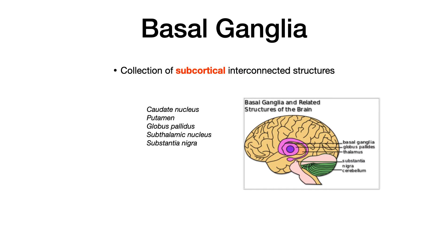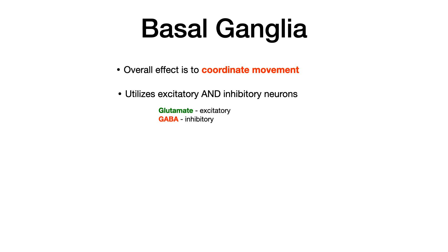The overall effect of the basal ganglia is to coordinate movement. It uses both excitatory and inhibitory interneurons to connect these structures. As a general rule, any neuron that uses glutamate is going to be excitatory, and any neuron that uses GABA is going to be inhibitory. This is a really high-yield concept for USMLE and COMLEX: glutamate equals excitation, GABA equals inhibition.